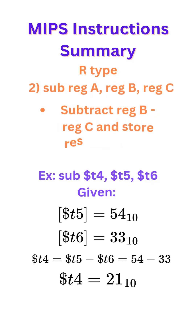Next our R-type is sub. Sub register A, register B, register C. This instruction basically subtracts register B minus register C and stores the result in register A.